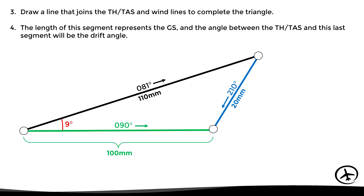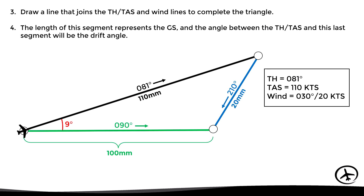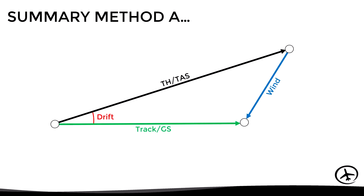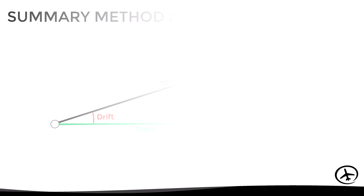In practical terms, this triangle tells us that with a wind of 030 degrees at 20 knots, an aircraft flying with a heading of 081 and a true airspeed of 110 knots will actually be flying with a track of 090 degrees and a ground speed of 100 knots. Here we can see a summary of the different segments and components of this triangle constructed using Method A.